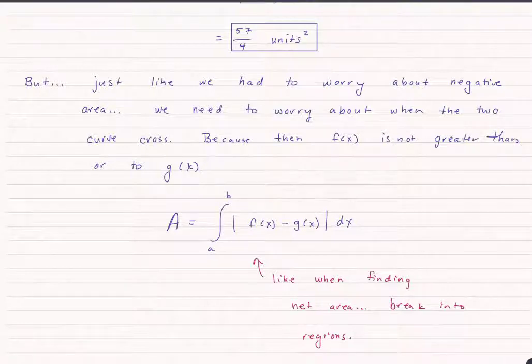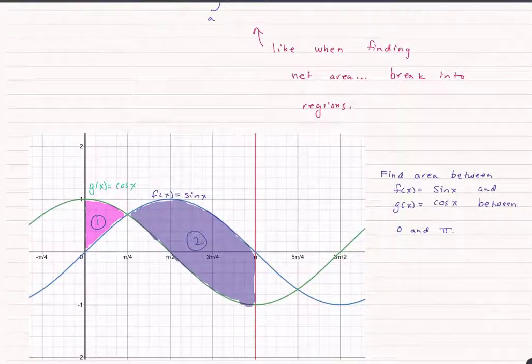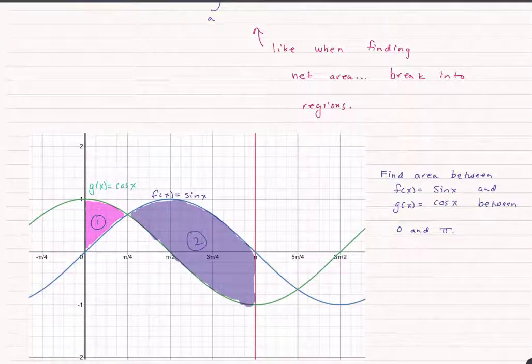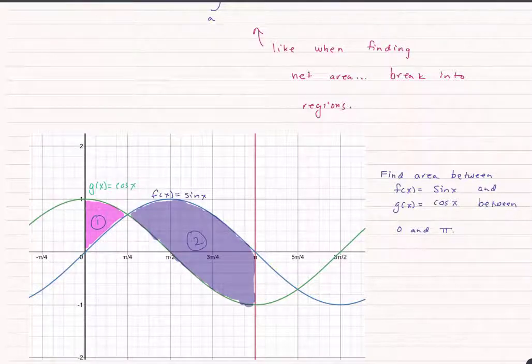So let's look at another example. In this case, we have g of x being cosine of x and f of x being sine of x, and we want to find the area between these two curves between zero and pi. You can see that they cross at the point pi over four. So region one in pink is the case where g of x is greater than f of x, whereas section two, f of x is greater than g of x.